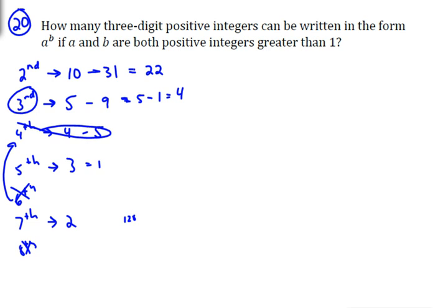And so the number of ways is going to be 1 plus 1 plus 4 plus 22, which is 28 ways.